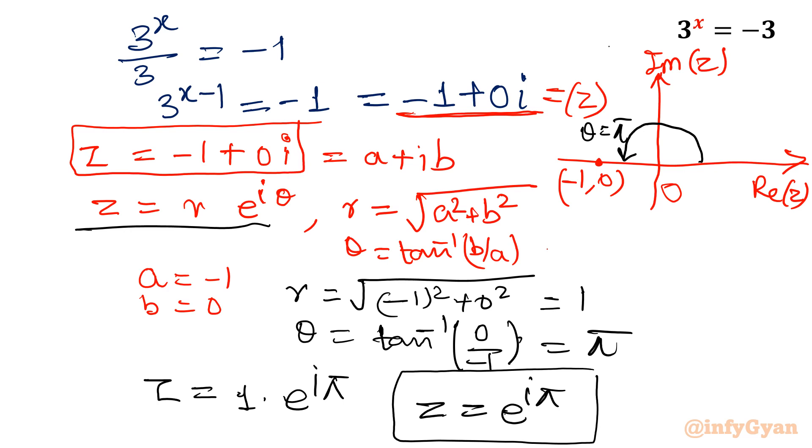Remember, we have to put the value in the given equation: 3 power x minus 1 equal to e raised to the power i pi. So x minus 1 equal to e raised to the power i pi. This is particular solution because in the interval 0 to 2 pi.